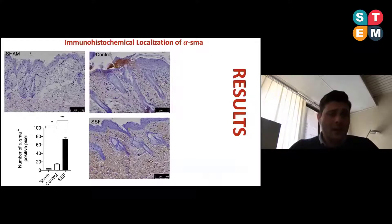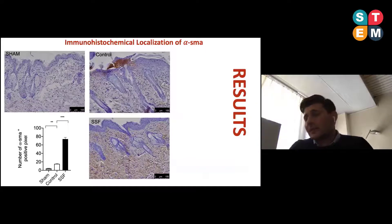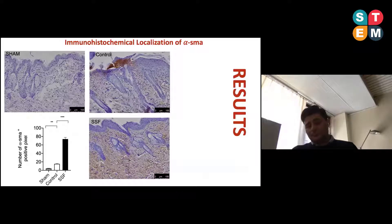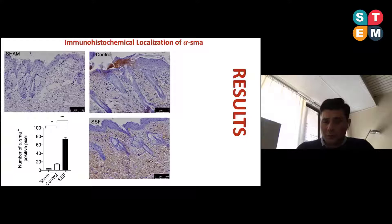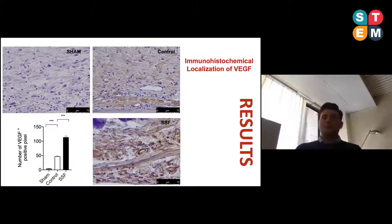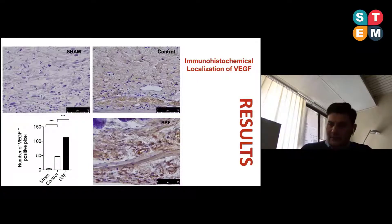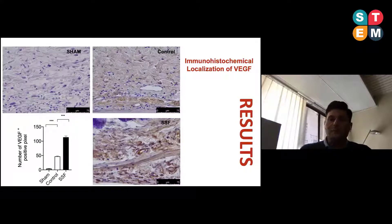We performed immunohistochemical localization of alpha-SMA, and in this case we can see that the number of positive cells for alpha-SMA is higher in the snail secretion group compared to the control group. We then moved to perform immunohistochemical localization of VEGF — a very important marker of neovascularization — and in this case we can also see that treatment with snail secretion filtrate gives a better response in terms of new vascularization.